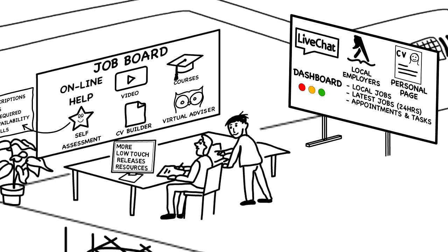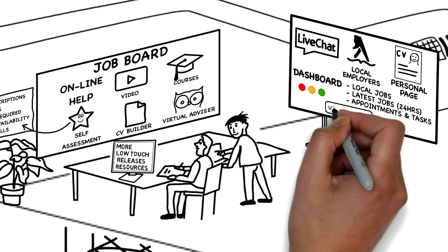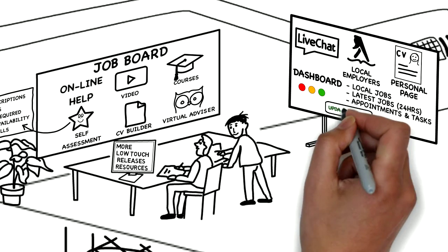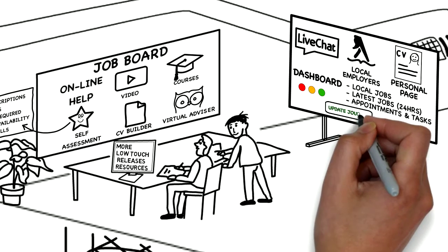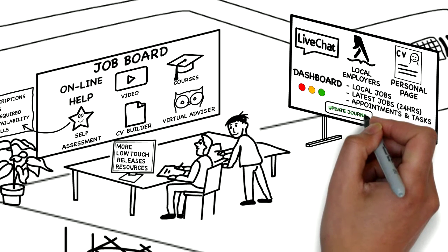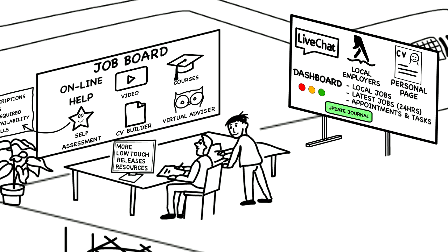And SMS and email messages can also be sent. A well designed and integrated service will facilitate the claimant's journey and help them follow the behaviours required by Universal Credit. The Job Board will, therefore, need to update the claimant's Universal Credit work journal with this evidence of activity and show progress to date for the period.